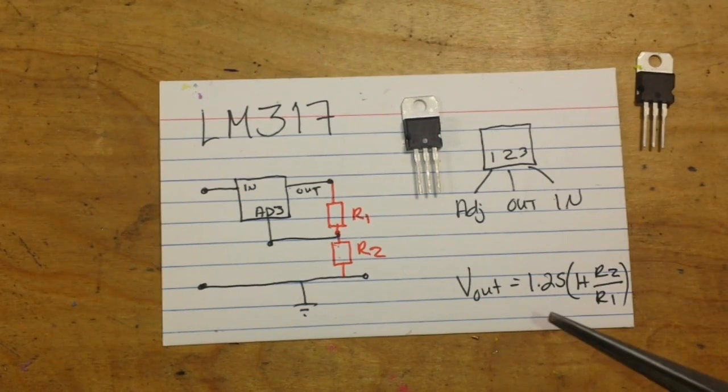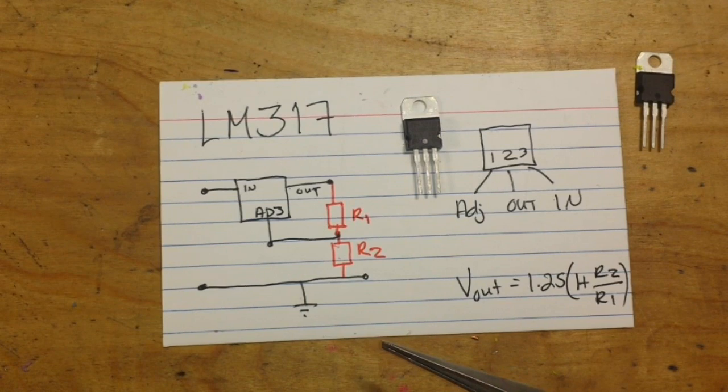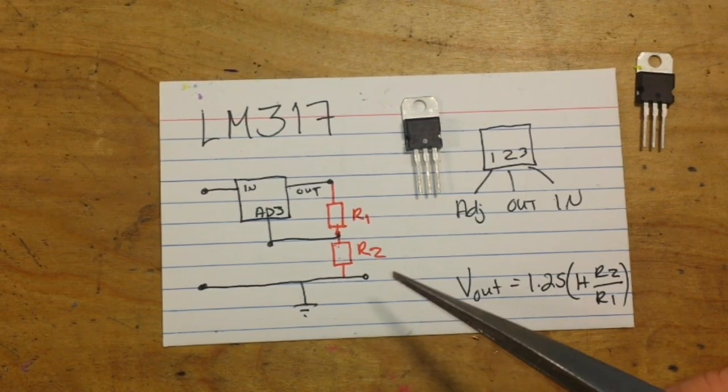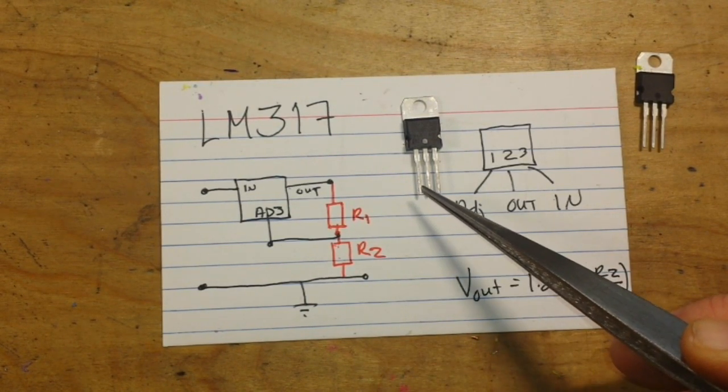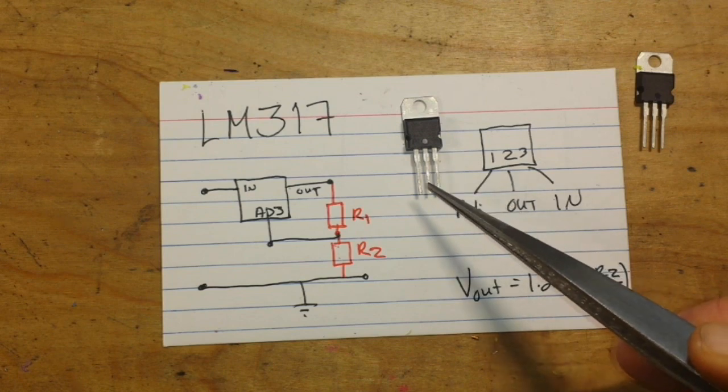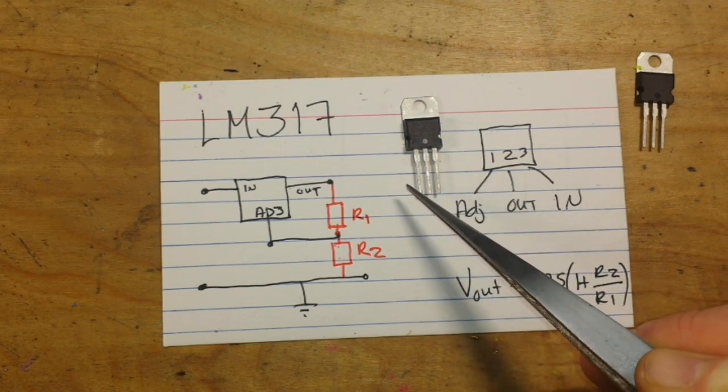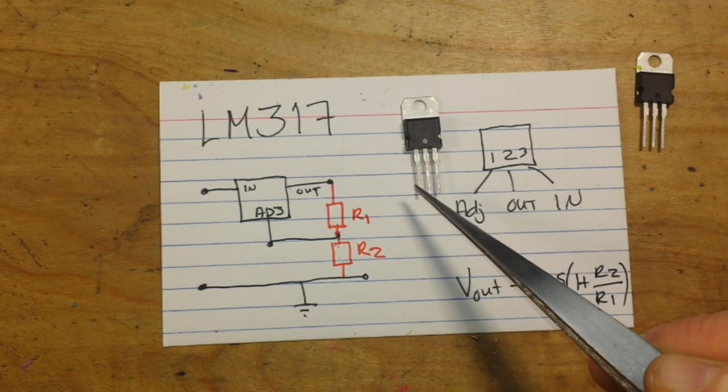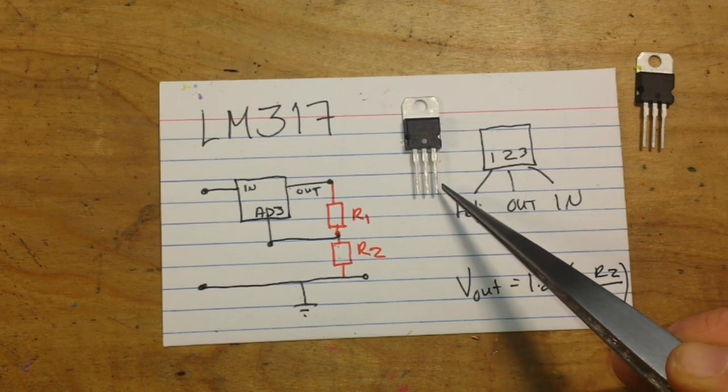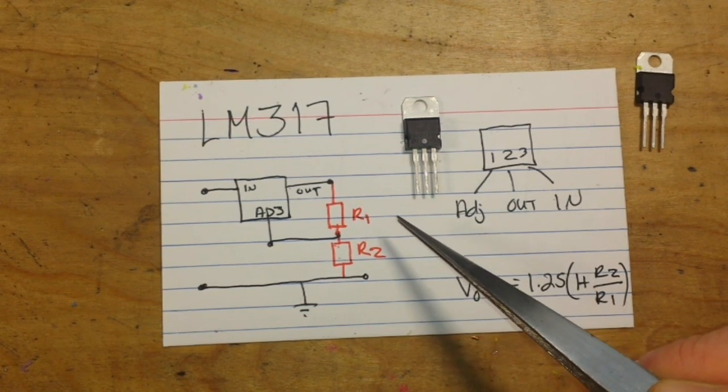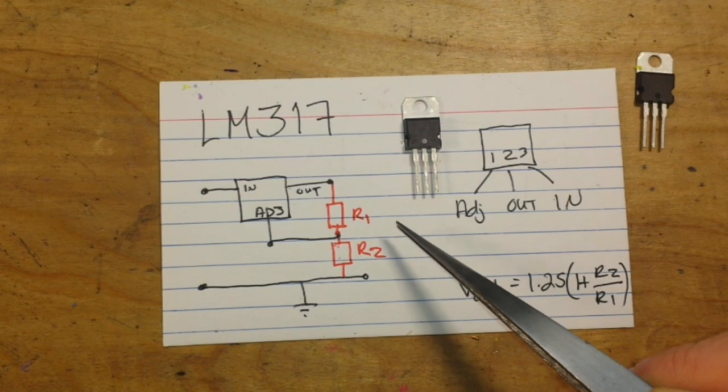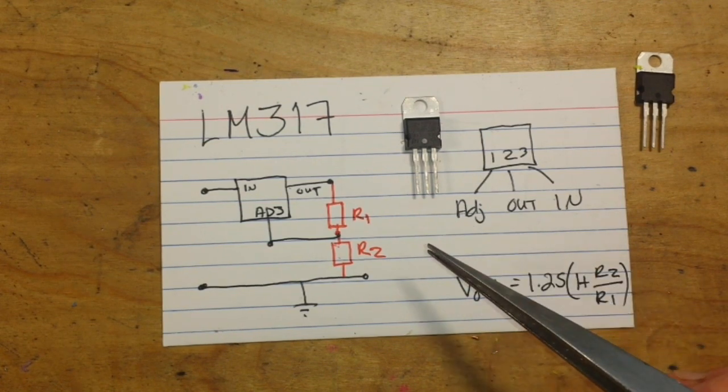I'll put a link to the datasheet for this down below so you can look it up, but I'll just hit the high spots. It's good for a low of 1.25 volts, a high of 37 volts, and about 1.5 amp output. And it's good up to about 150 degrees C. And the line regulation at 5 volts is about 2.5 millivolts.